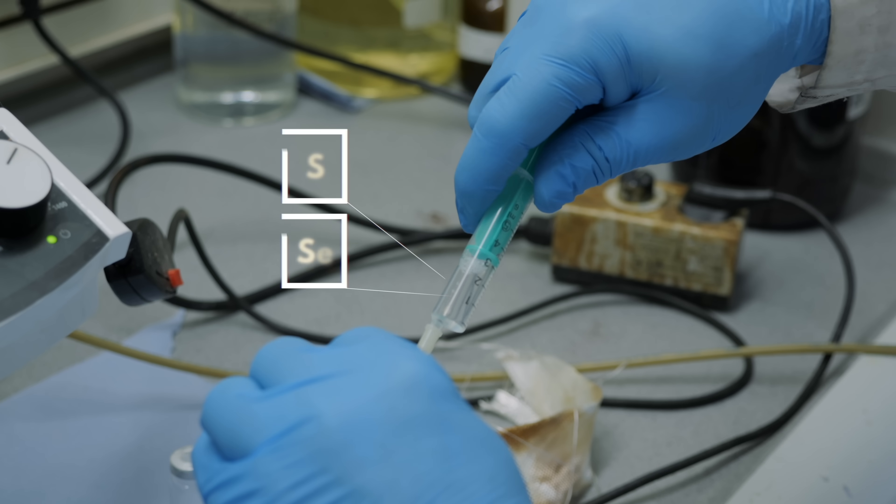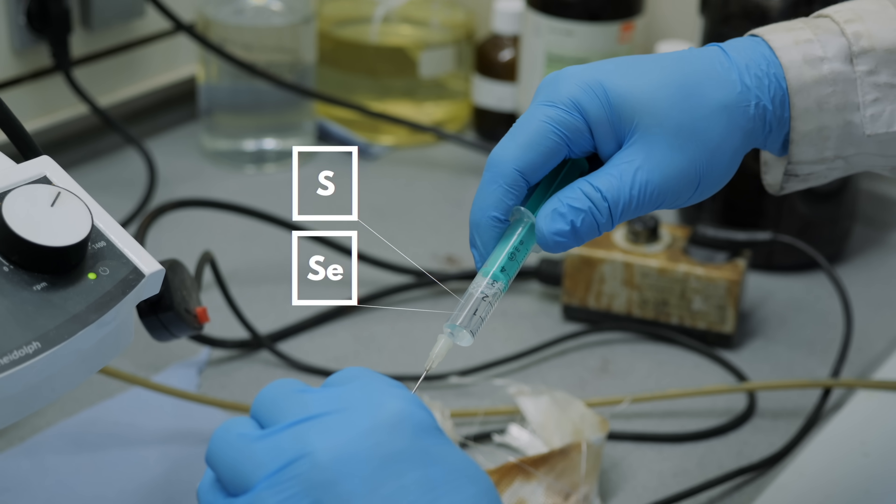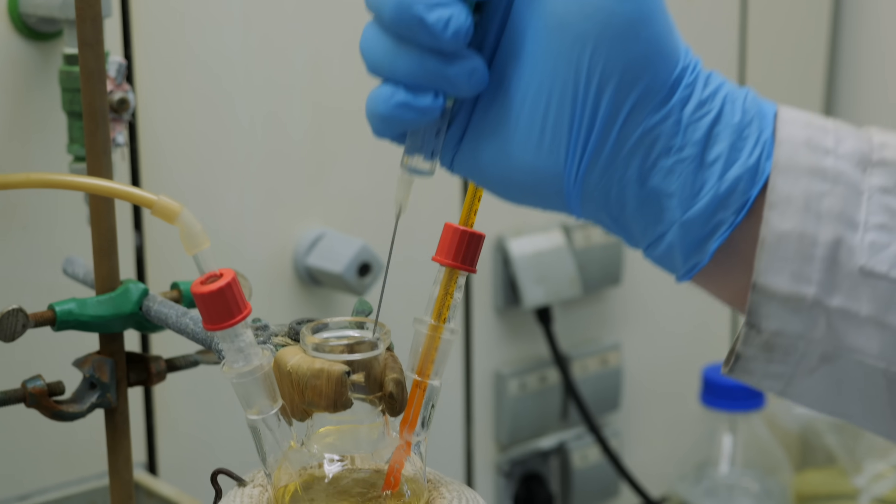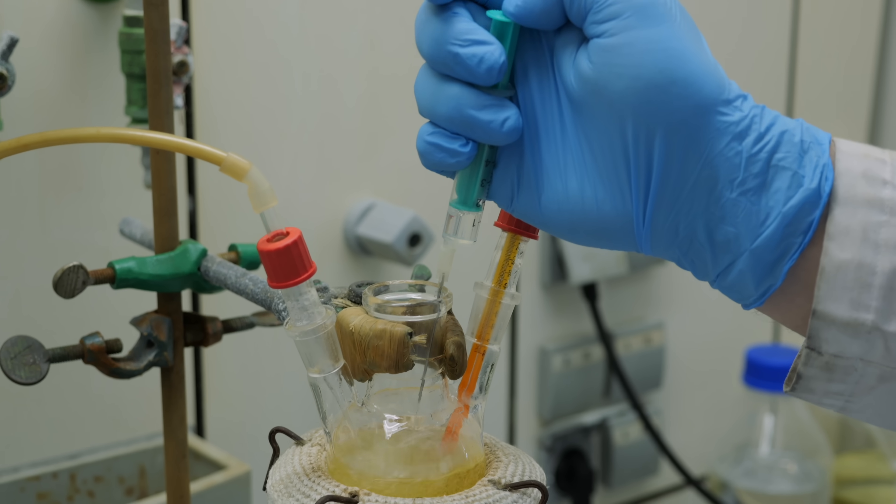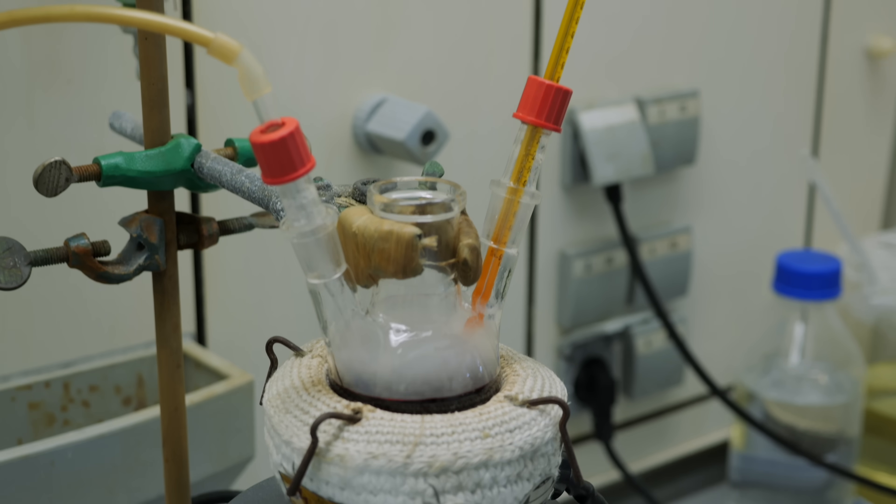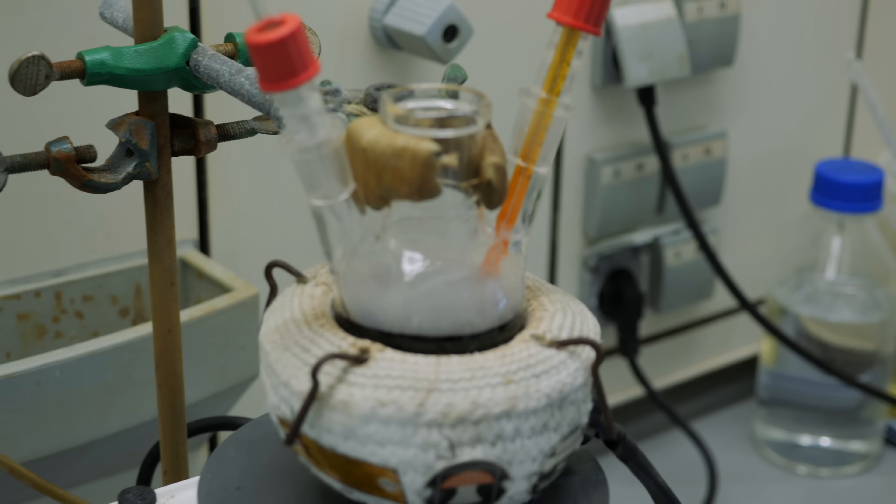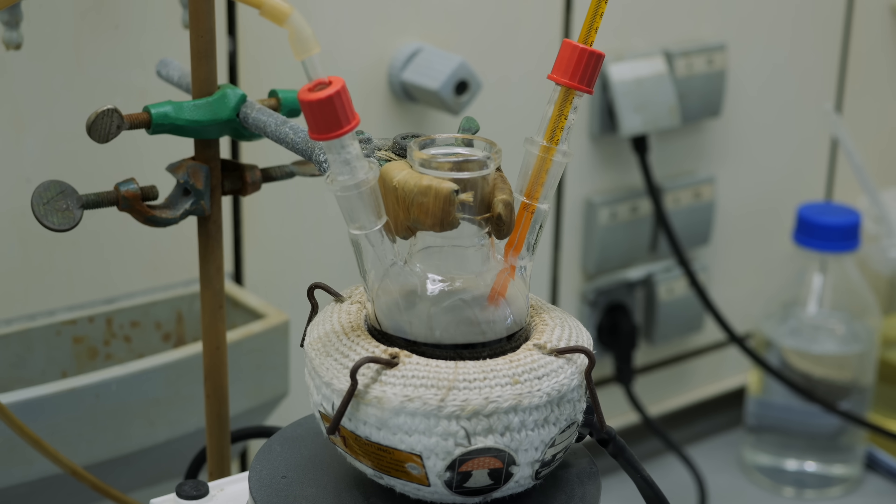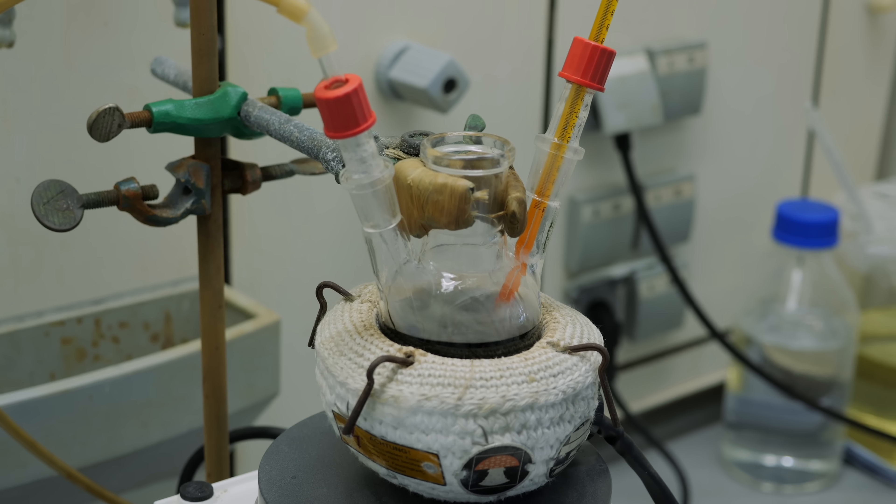Once we reached this point, we prepared the two other ingredients which are our source of selenium and sulfur. They came in a form of a clear liquid at this stage and so we used a syringe to add them. And you can see that as soon as they were added, the color changed almost instantly as our four main ingredients rapidly reacted to form the tiny nanocrystals that we were actually after.